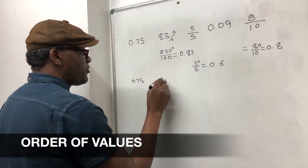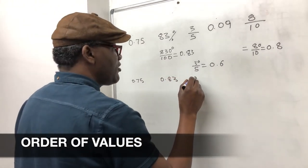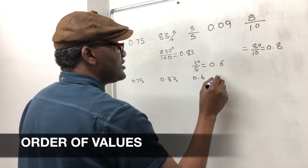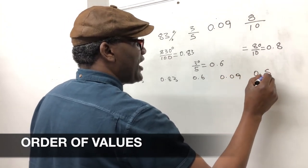So now you've got 0.75, 0.83, 0.6, 0.09, and 0.8.